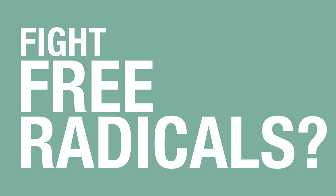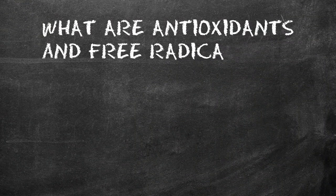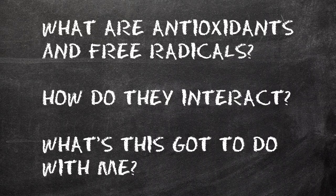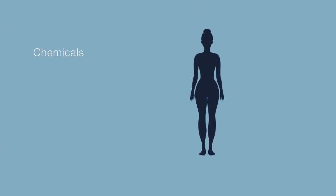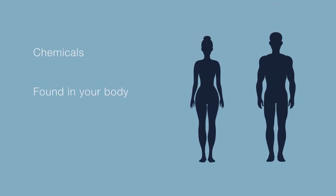In this video I'll be focusing on what antioxidants and free radicals are exactly, how they interact and what this has to do with your health. Antioxidants and free radicals have some things in common. For starters, they are both chemicals. Both are found naturally in your body and the production of both can also be increased by diet and environment respectively.